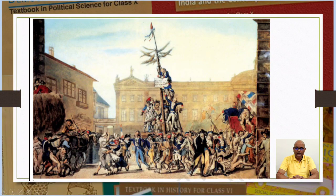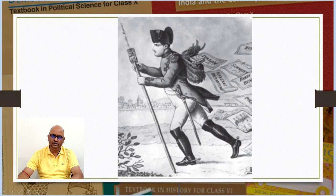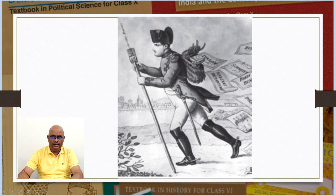Figure 5 shows Napoleon represented as a postman on his way back to France after he lost the Battle of Leipzig in 1813. Each letter dropping out of his bag bears the name of a territory he had lost.